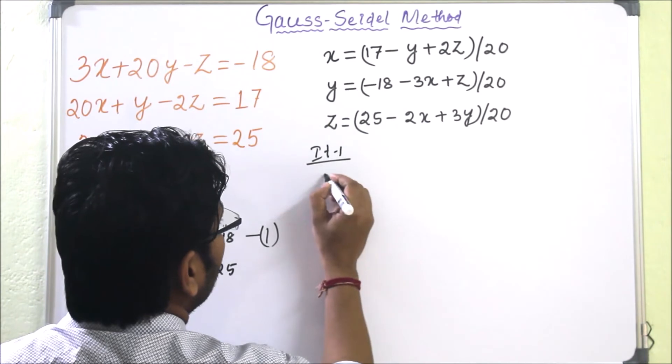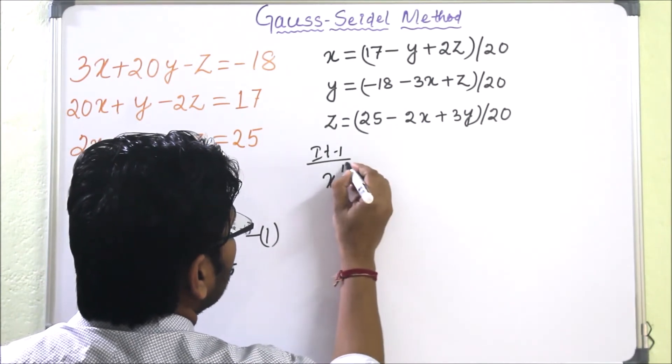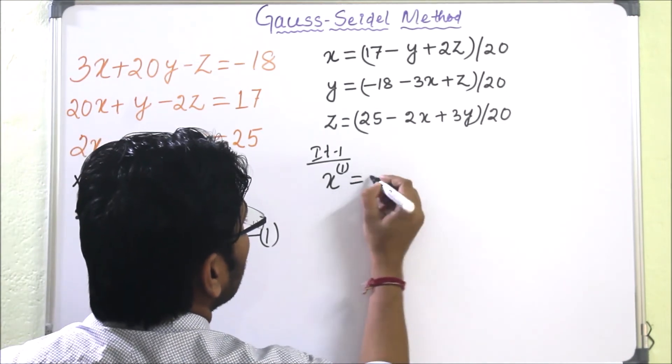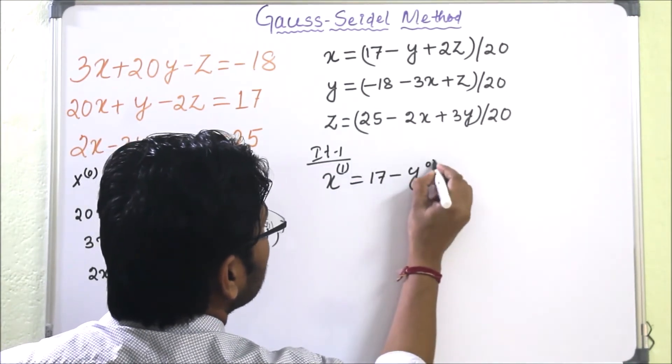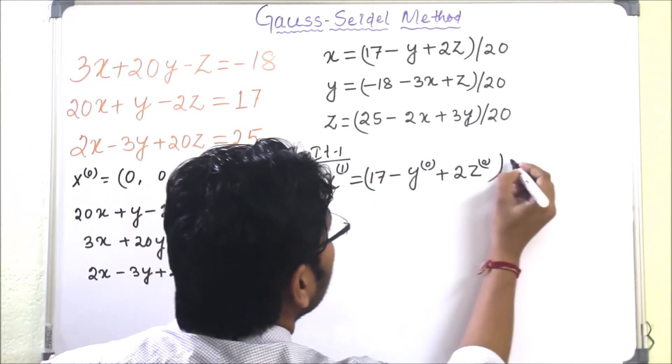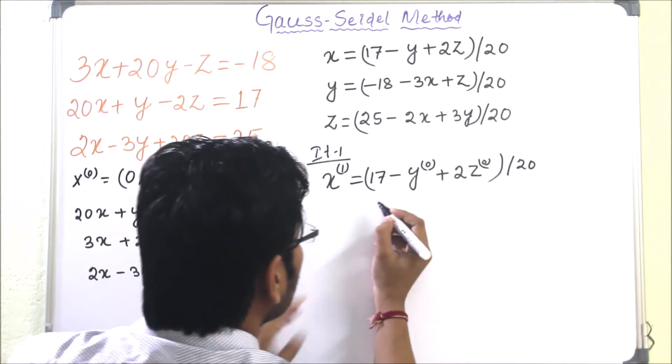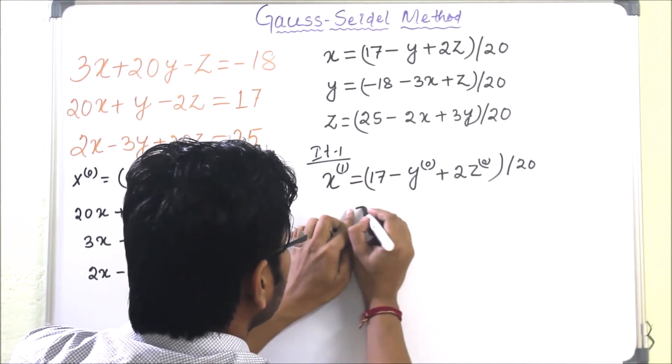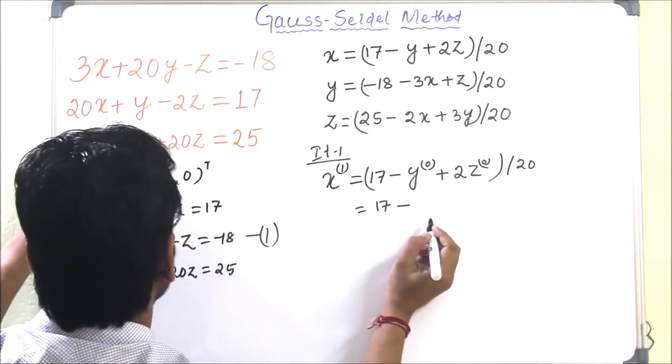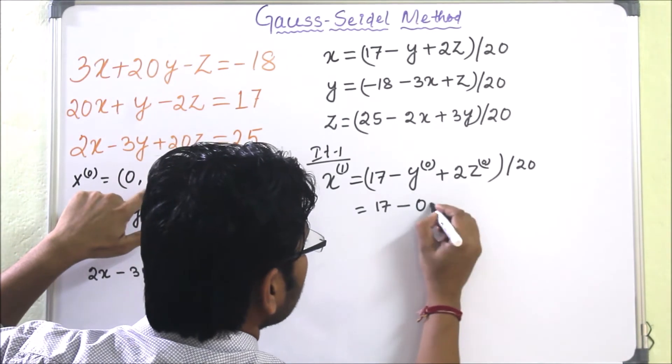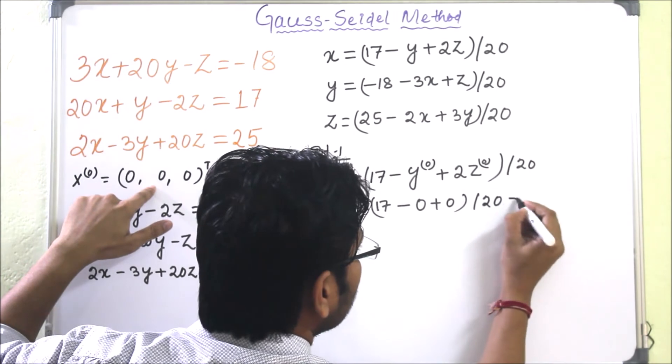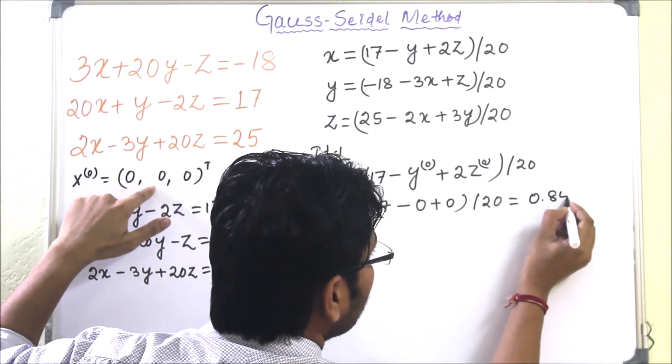So in iteration 1 we have to find X1. If we put 0 values, then X1 will be (17 minus Y0 plus 2Z0) divided by 20. So it is 17 minus 0 plus 2 times 0 divided by 20, and it will be 0.85.